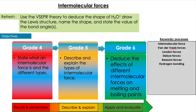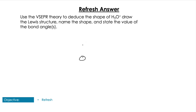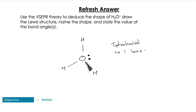Using VSEPR theory, deduce the shape of H3O+: draw the Lewis structure, name it, and give the bond angle. With H3O+ we have four electron domains but three bonding pairs, giving us a tetrahedral base structure with one lone pair — that gives us a trigonal pyramidal shape. Because of the lone pair we would normally have 109.5°, but we reduce that by two degrees to give us 107.5° as the bond angle.